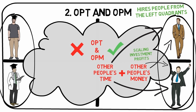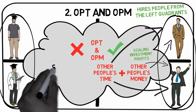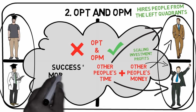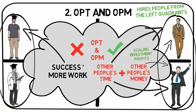Herein lies the big difference. People from the E and S quadrants never get to use OPT or OPM. Therefore, the more successful they become in their quadrants, the more money they make, but at the same time, their workload increases.